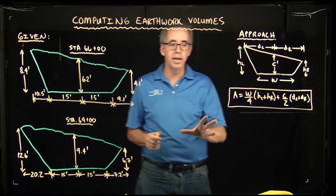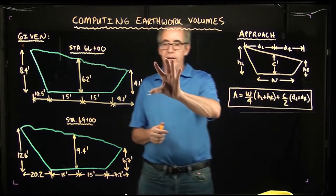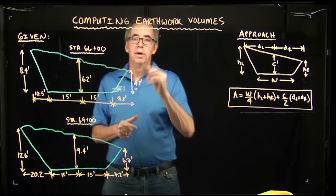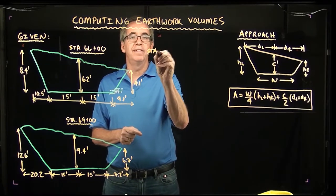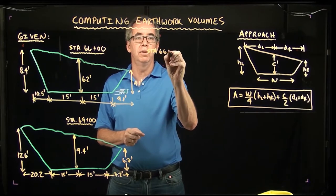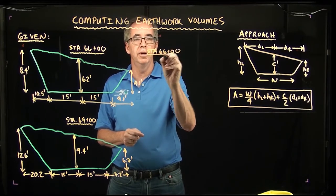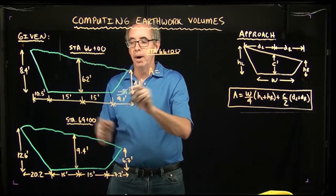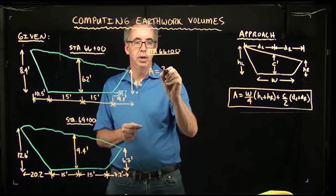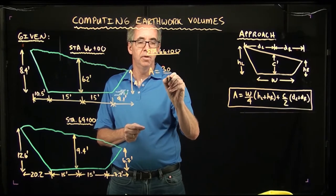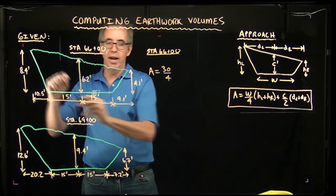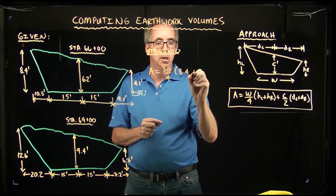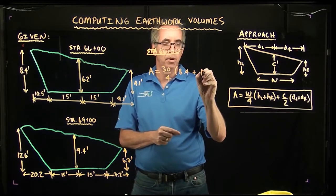So basically what we'll do right now is just follow the formula for each one of these cross sections and figure out what we have. So at station 66+00, if I start calculating this I'm just going to substitute these terms in. My width is 30 feet and that's over 4. I have this height of 8.4 and I have this height here of 4.1.